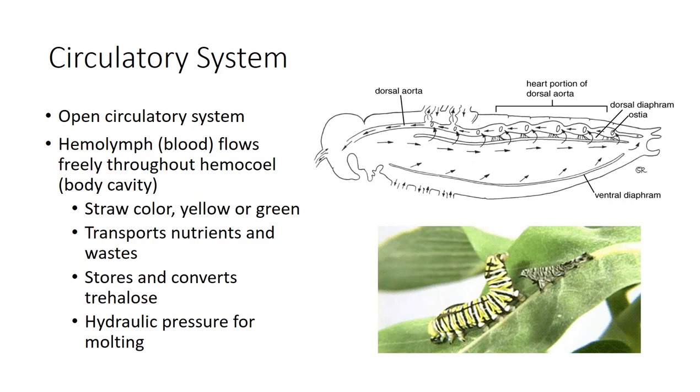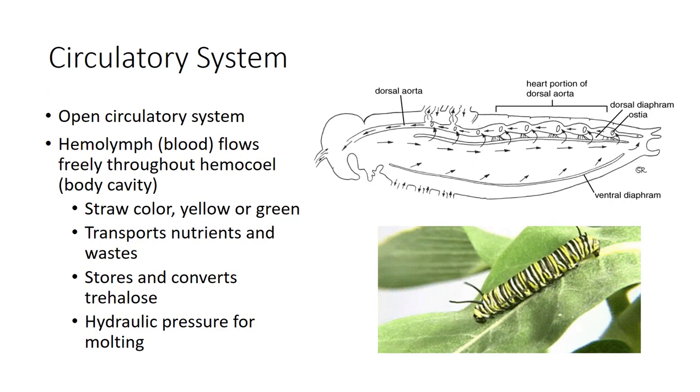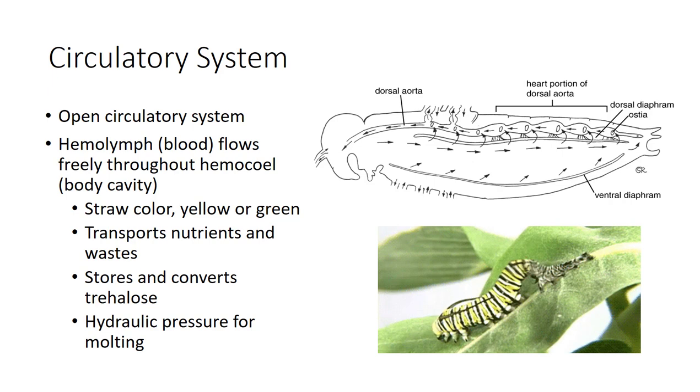The hemolymph is approximately 90% water, straw colored, yellow or green, without any hemoglobin since it's not involved in respiration. It transports nutrients and waste to and from the organs and tissues. It will temporarily store and convert trehalose, a type of sugar broken down for energy. It also creates hydraulic pressure needed in molting and hatching.